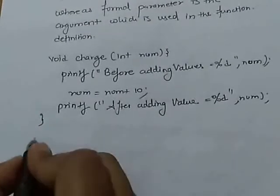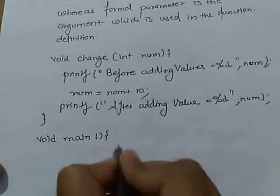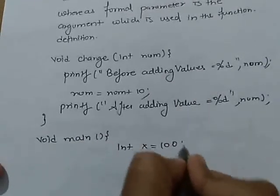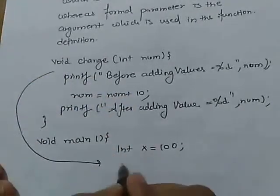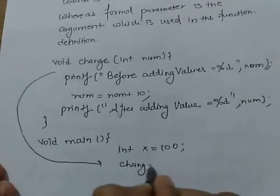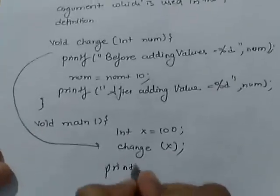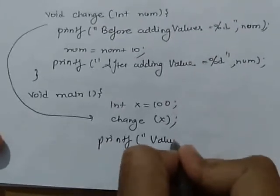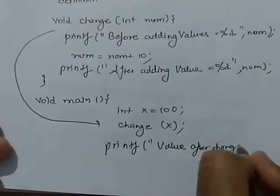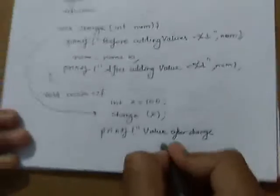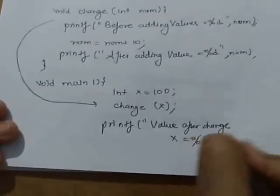Now create a main function, void main. Inside the main function, take an integer variable x equal to 100 and call this function and pass this value. Now print here: value after change, x equals percent d, x.